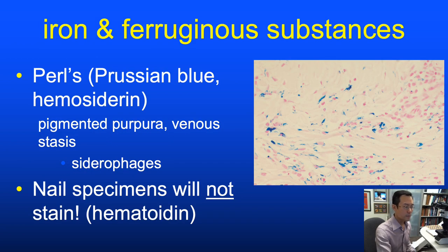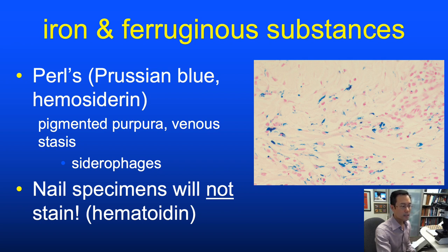The other brownish pigment that can be confused with melanin is hemosiderin, present in the upper dermis in conditions like pigmented purpura or venous stasis. Pearls, Prussian blue, hemosiderin—these are all equivalent; we call it the hemosiderin stain. Usually the distinction can be made on H&E, but if both might be present—such as in some drug-induced pigmentation like minocycline—the stain can be helpful.